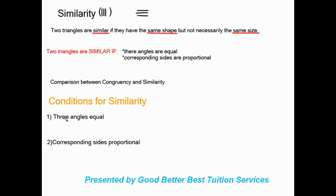Our conditions for similarity: first, three angles are equal in both triangles. Second, the corresponding sides are proportional. So we look for either three equal angles or proportional sides. Let's get into an example.